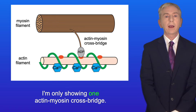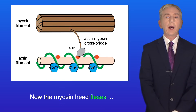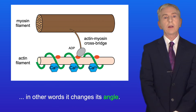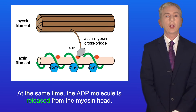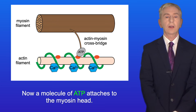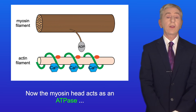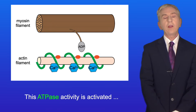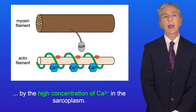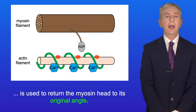I'm only showing one actin-myosin cross bridge, but remember this will be happening with hundreds of myosin head groups at the same time. Now the myosin head flexes — it changes its angle, pulling the actin filament along. At the same time, the ADP molecule is released from the myosin head. A molecule of ATP then attaches to the myosin head, causing it to detach from the actin-myosin binding site. The myosin head acts as an ATPase, hydrolyzing the ATP to ADP and phosphate — this ATPase activity is activated by the high concentration of calcium ions in the sarcoplasm. The energy from ATP hydrolysis is used to return the myosin head to its original angle.